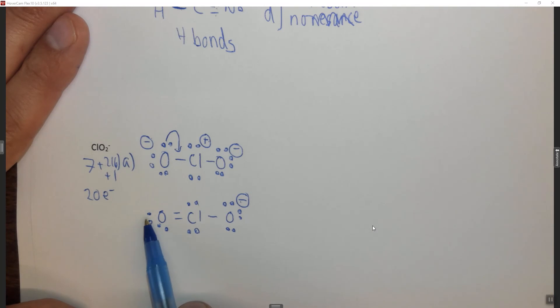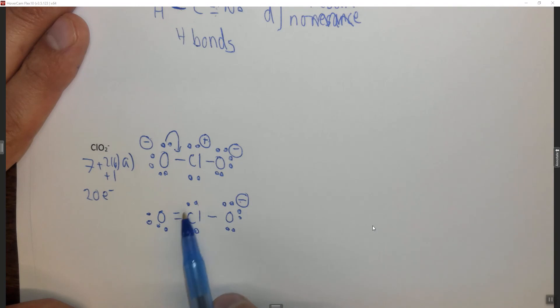However, if you're not sure about that, just count it again. Oxygen wants six, has one, two, three, four, five, six. It's neutral. Chlorine wants seven, has one, two, three, four, five, six, seven. It's neutral. This oxygen doesn't change, so it's still minus. Or you can count it again, and it's seven, and it wants six, so it's negative.